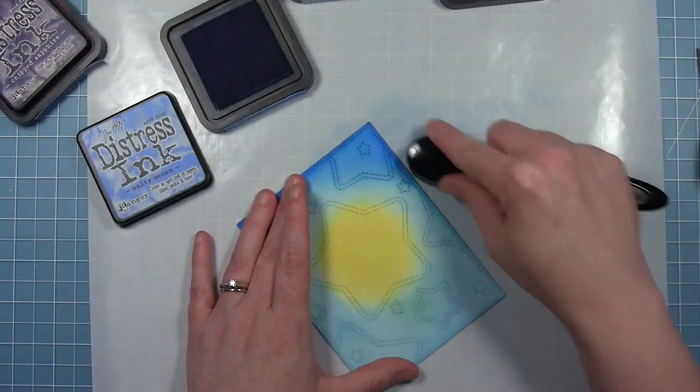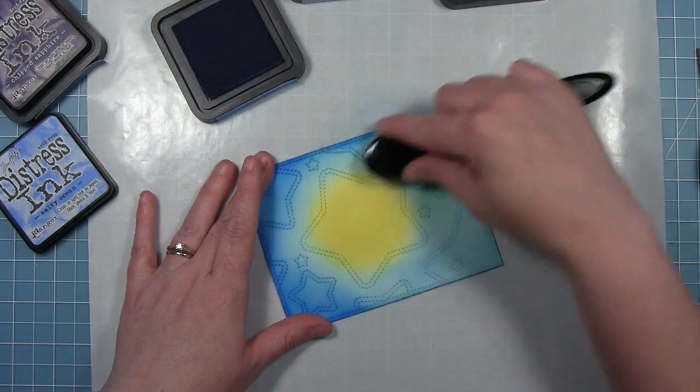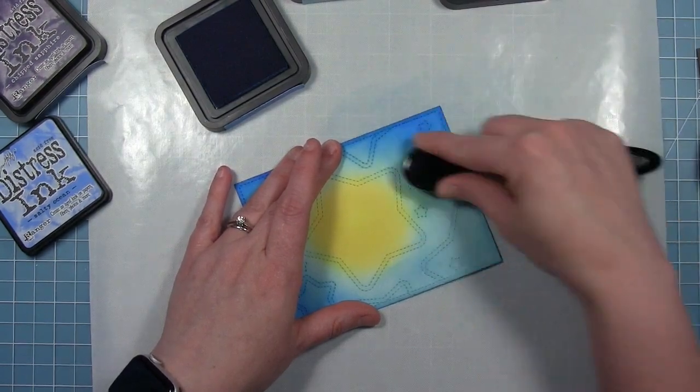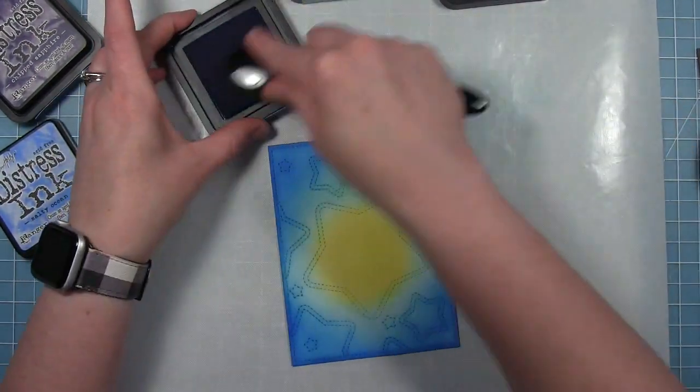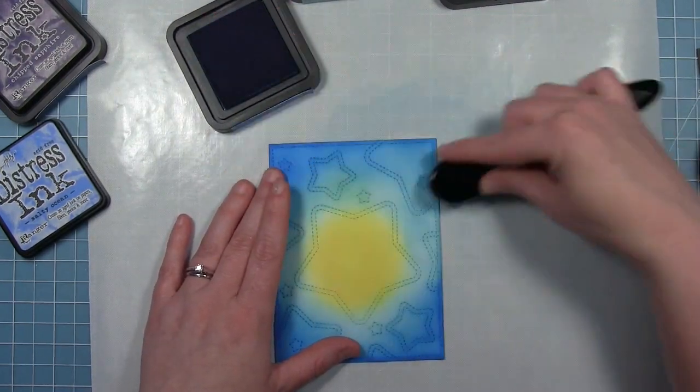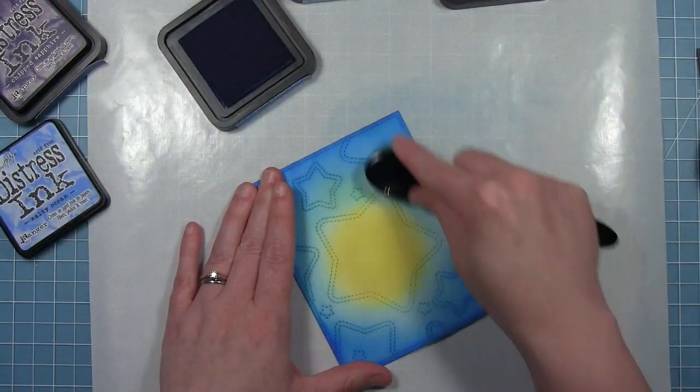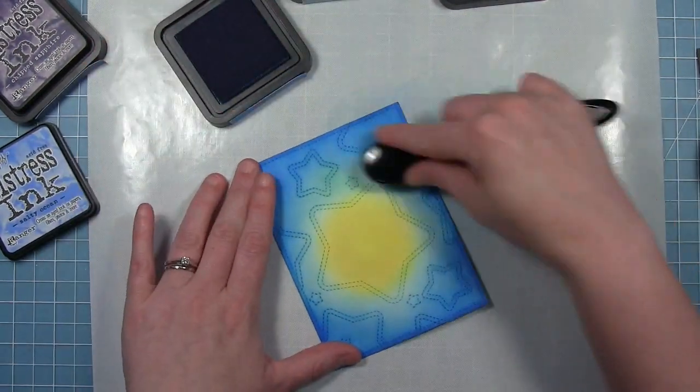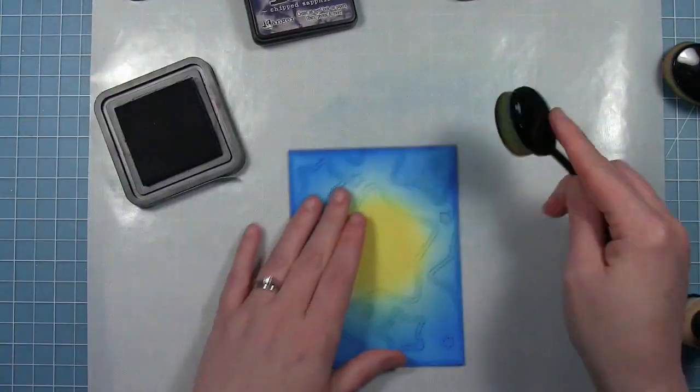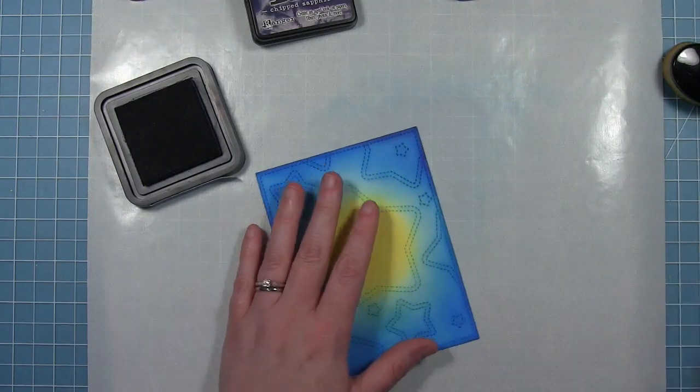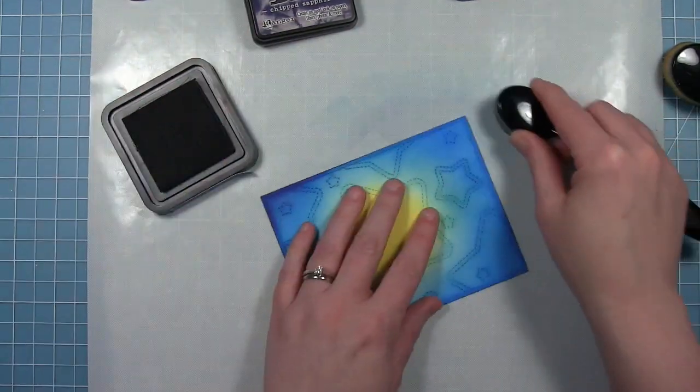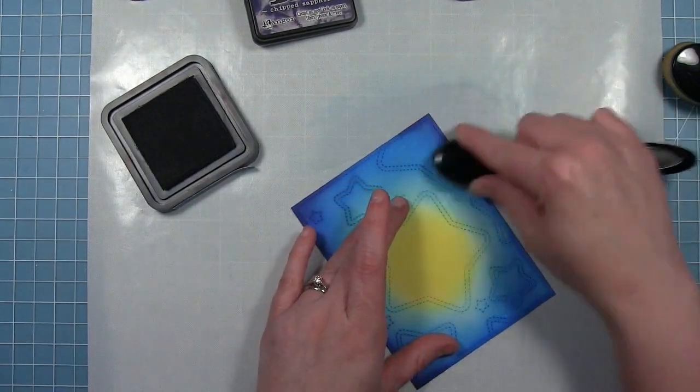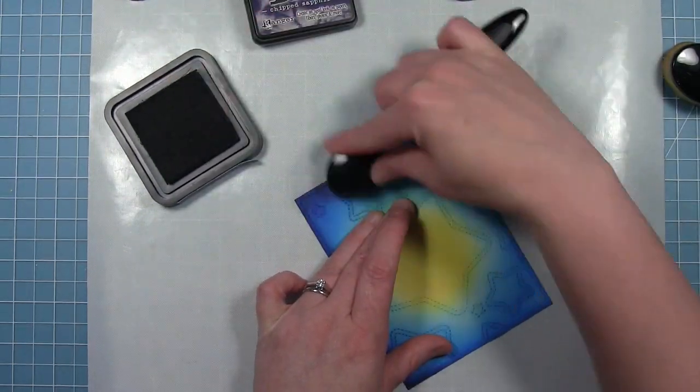So I don't want to go all the way up to the yellow. I'm sort of leaving a line around it of that tumbled glass. And you can see with this darker blue that those stitching lines stand out even more. And then finally I'm going in with chipped sapphire which is a very very dark blue and I'm just doing those corners. So to just darken up those edges so that it really defines the edges and this whole panel will pop off that white note card that I'm going to stick it on.